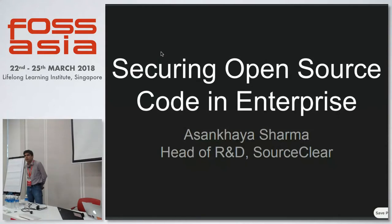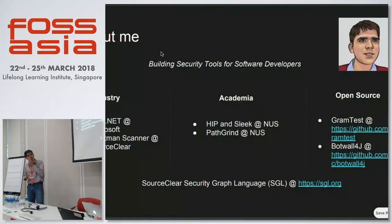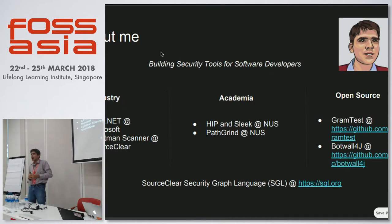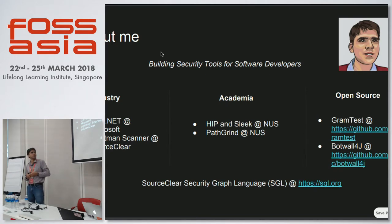Thanks everyone for coming to my talk. I'm Sankey Sharma, head of research and development at SourceClear, a software security startup focused on helping enterprises manage open source safely. To summarize the last 10 years of my professional career in a single sentence: I've been focused on building security tools for software developers — at large companies like Microsoft where we built CAT.NET, at SourceClear where we built the Lightman scanner, during my PhD at the National University of Singapore, and through open source security tool projects.